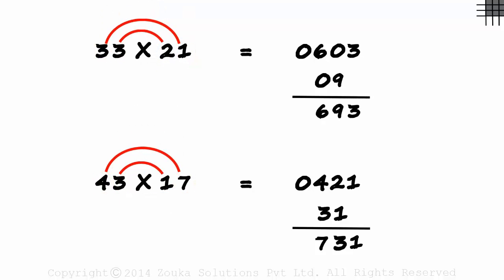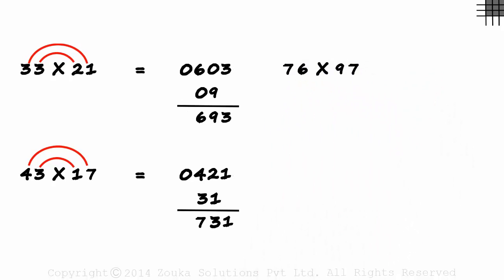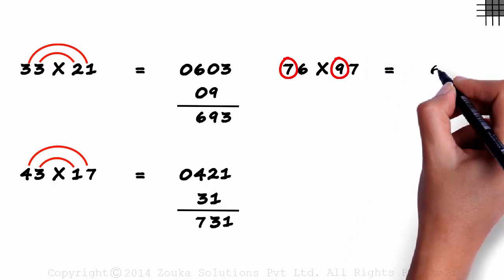Now take a slightly tougher one. 76 times 97. Give it a try. It's easy, just that the numbers are bigger this time.